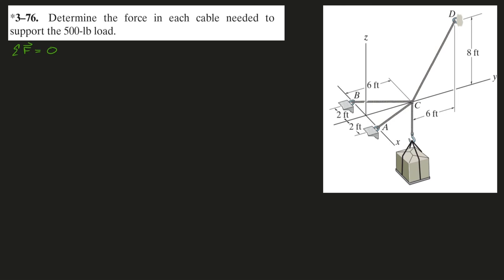In this problem we need to determine the force in each cable needed to support this 500 pound weight. We're going to add up all of our forces and set that equal to zero. So we have force CA, this one right here, plus force CB, plus force CD, plus the weight vector. All equals zero.